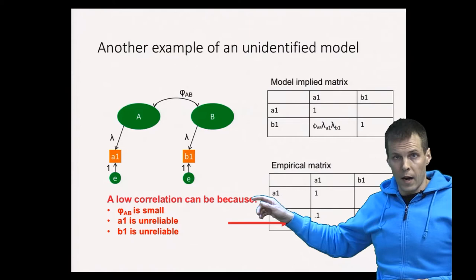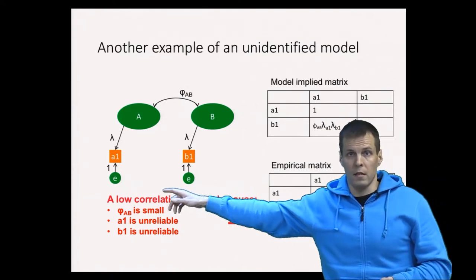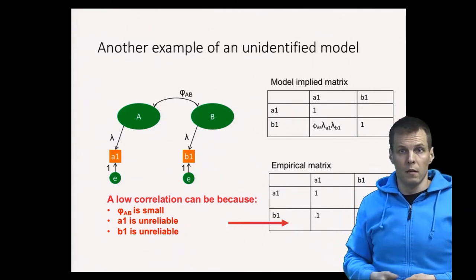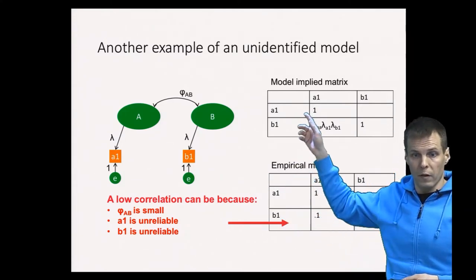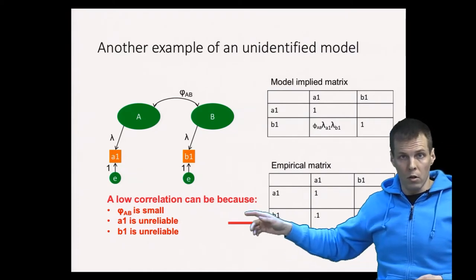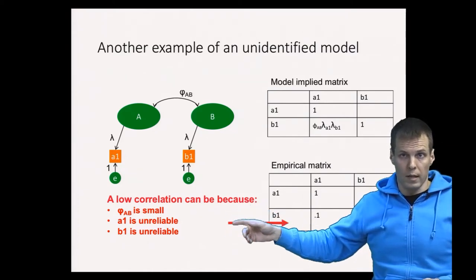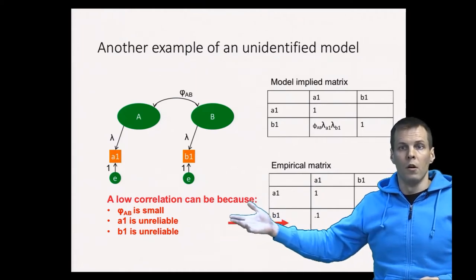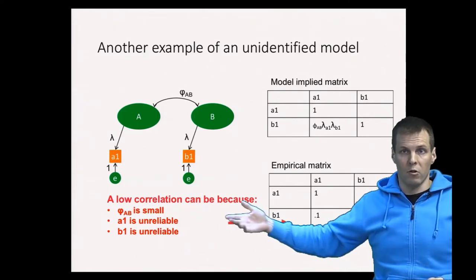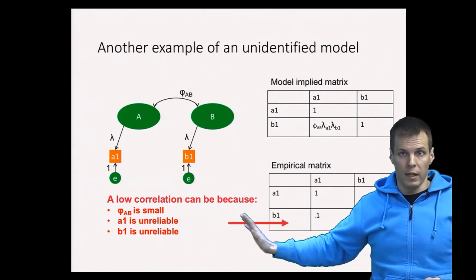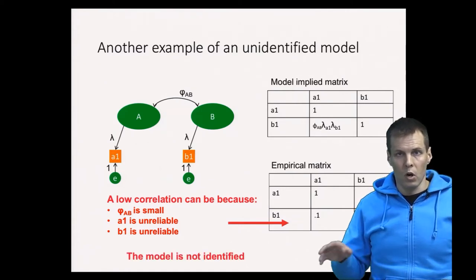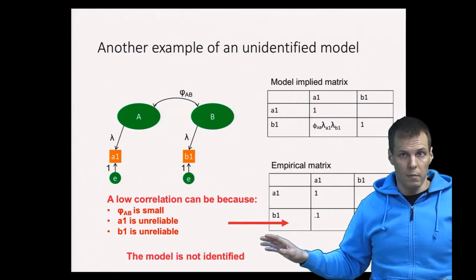Here we are estimating five things: two error variances, two factor loadings, and one factor correlation — from just three elements of information. We can't do that; the model is not identified. We cannot empirically distinguish which of the three explanations is correct. We could use theory to rule out alternatives, but that goes beyond factor analysis estimation and identification. This model cannot be estimated meaningfully.